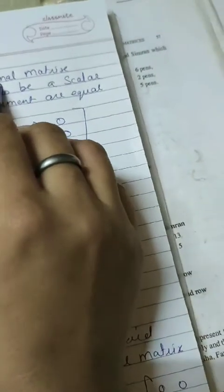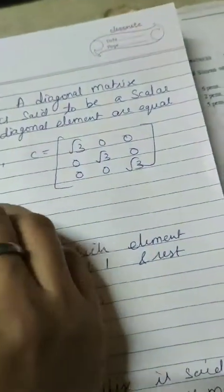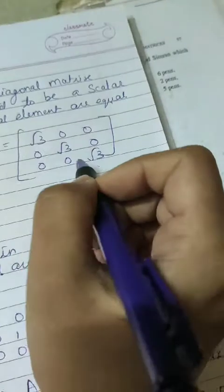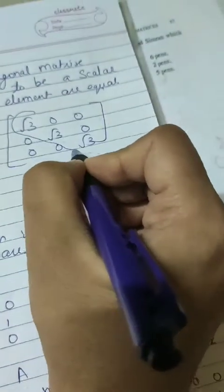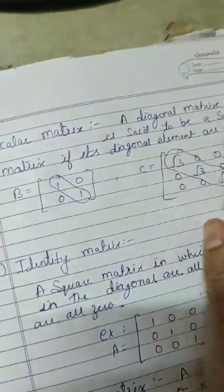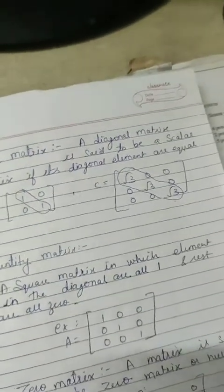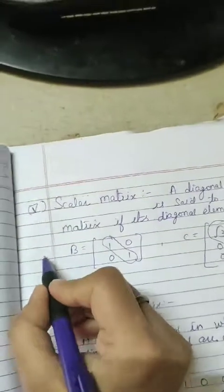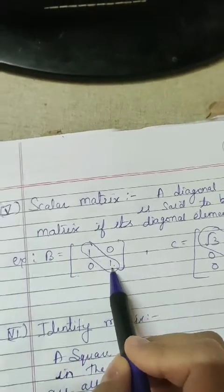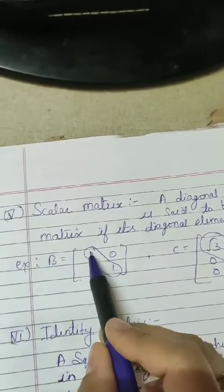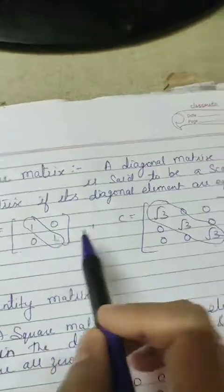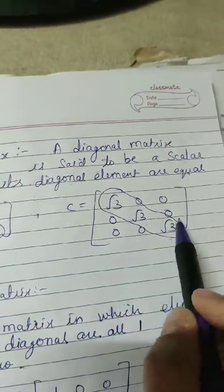Now moving on to the scalar matrix. A diagonal matrix is said to be a scalar matrix if its diagonal elements are all equal. You can see the values are similar. For example, B equals the matrix with 1, 0, 0, 1 — the diagonal values are both 1, so they are equal. You can also see root 3, root 3, root 3 along the diagonal. This is known as a scalar matrix.